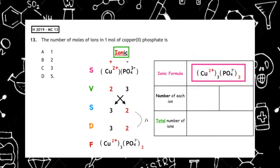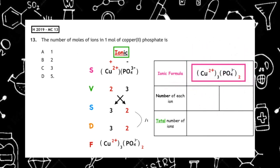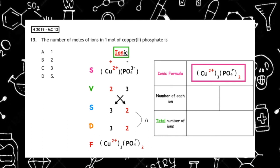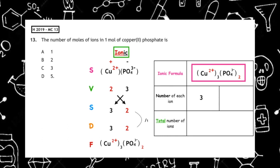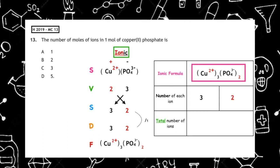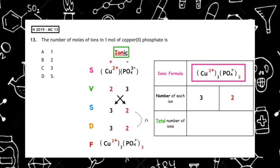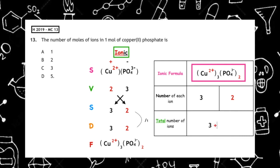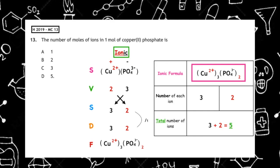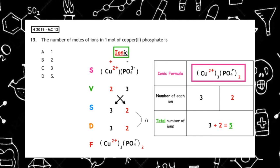We count the number of each ion in the formula we've worked out. We have 3 copper ions and 2 phosphate ions. When we add those up, 3 plus 2 gives us a total of 5, which means the correct answer is multiple choice answer D.